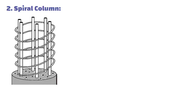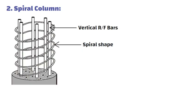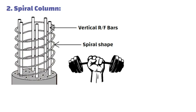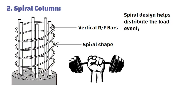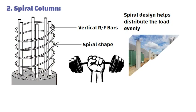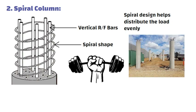2. Spiral Column: In a spiral column, the vertical reinforcement bars are wound in a spiral shape around the column. This type of column is stronger because the spiral design helps distribute the load evenly. Example: a round column in a building where the steel bars are wound in a spiral around the concrete.